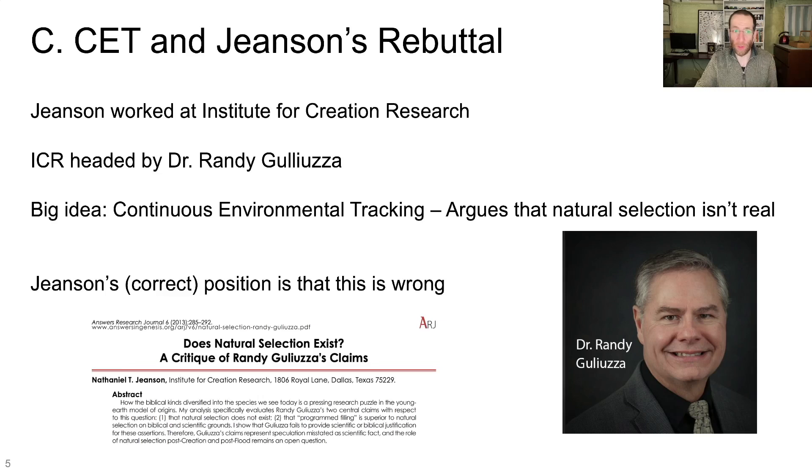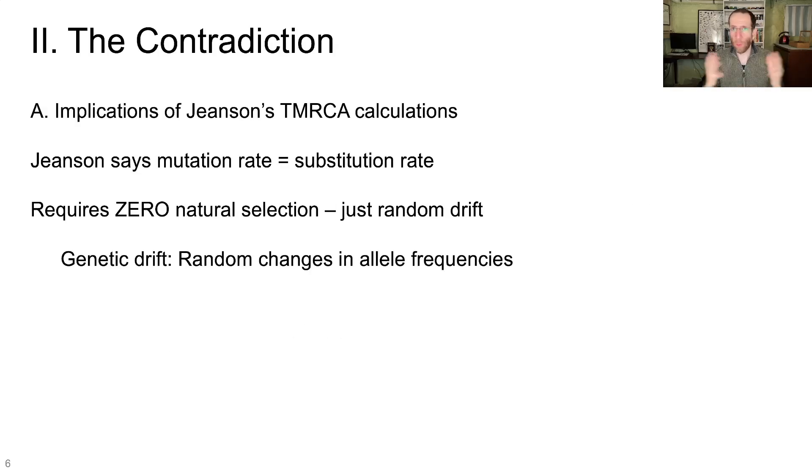It's basically an alternative mechanism of adaptation, and Galusa's big argument is basically that natural selection isn't real. Now Jensen, interestingly, his correct position is that this is wrong. He actually wrote a critique of continuous environmental tracking while he was still employed at ICR. He no longer works at ICR, and continuous environmental tracking has basically become like the company line, especially in the last few years. They've really started to push this idea of CET in a major way. But Jensen wrote this piece talking about natural selection, basically arguing against Galusa's idea that natural selection is fake.